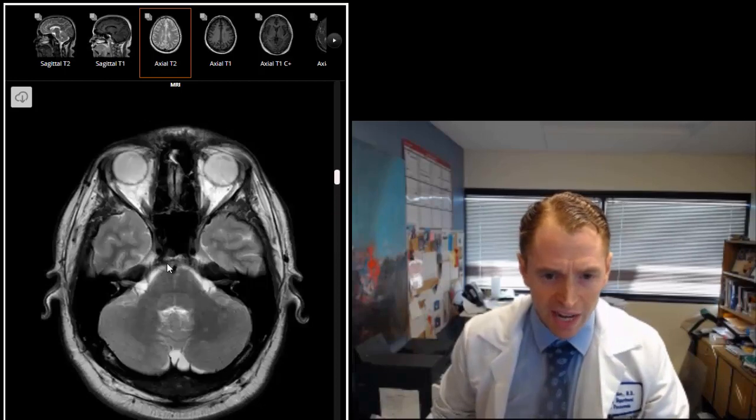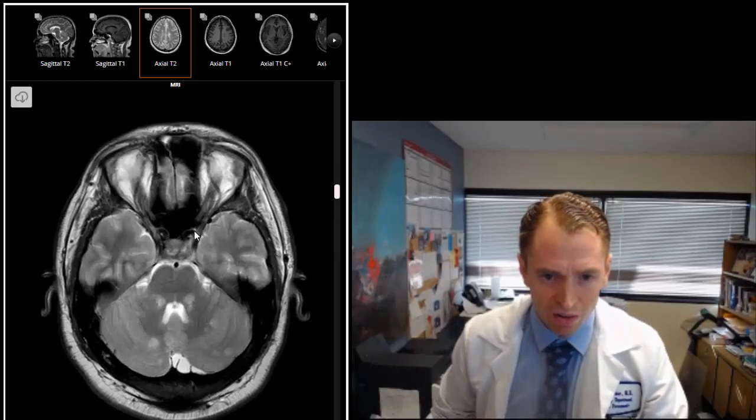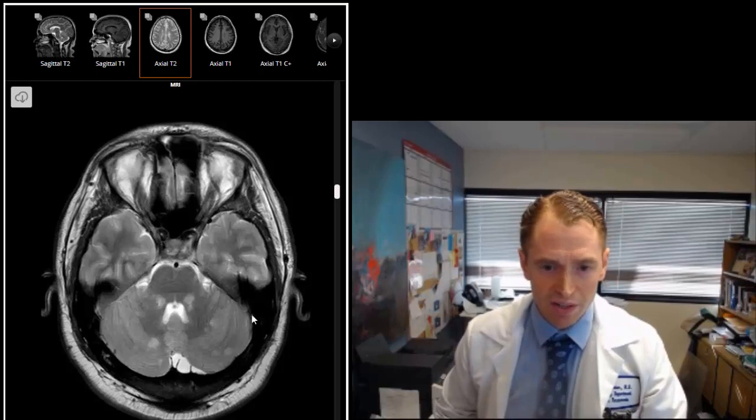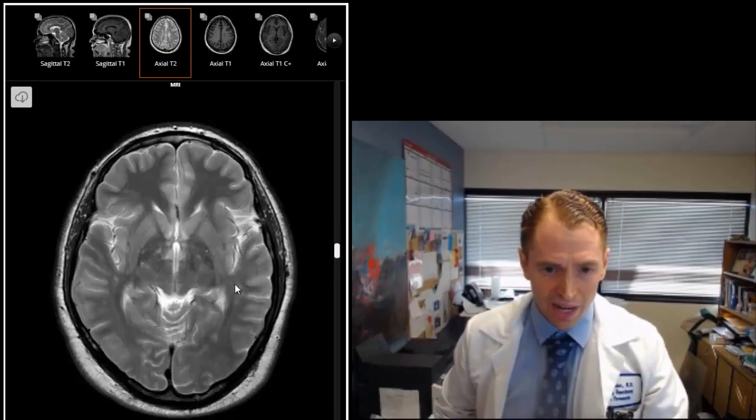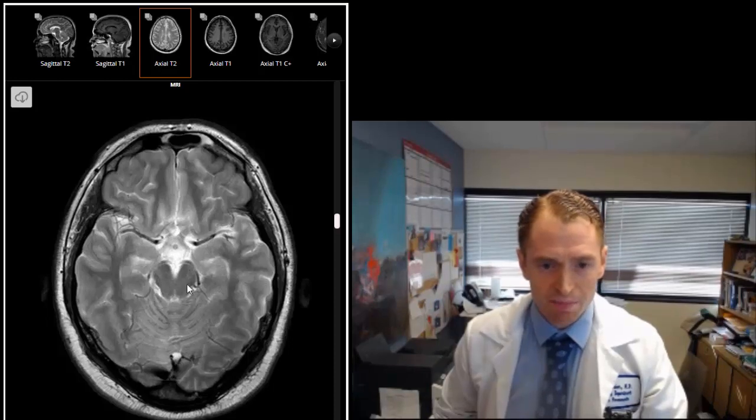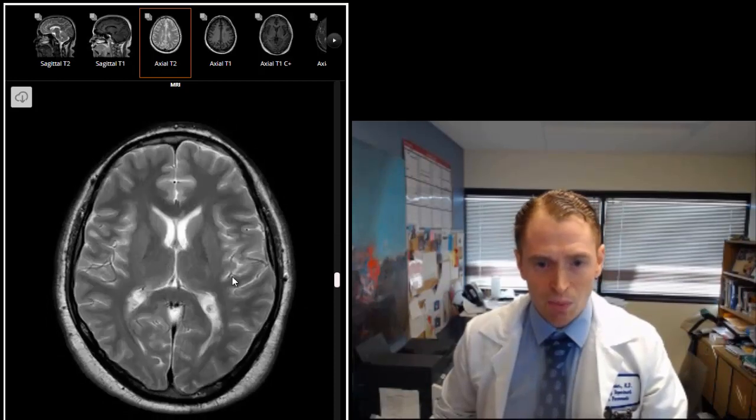Just to point out a little bit of anatomy: these are the internal carotid arteries coming into the brain, this is the pituitary gland, this is the basilar artery. If you look at it you can see these are the optic nerves and the optic chiasm and the optic tracts. These are the middle cerebral arteries for instance. This is the midbrain, these are the posterior cerebral arteries.